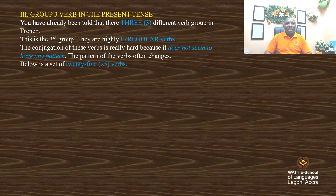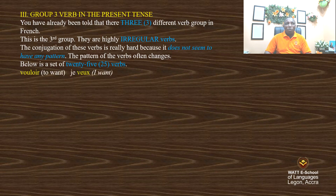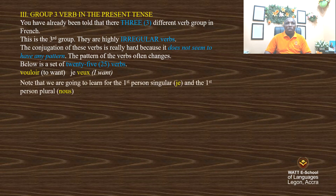Below is a set of 25 verbs I'm going to give you — this doesn't mean that's all, we have more than that, but this is a set of 25. To want — I'm going to conjugate all of them in the present tense.